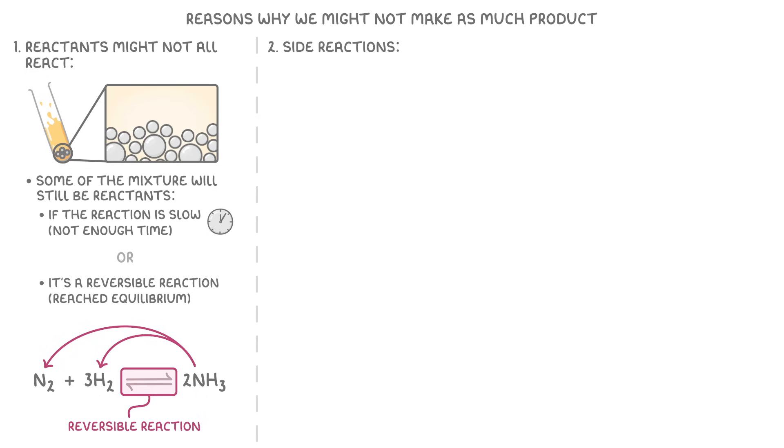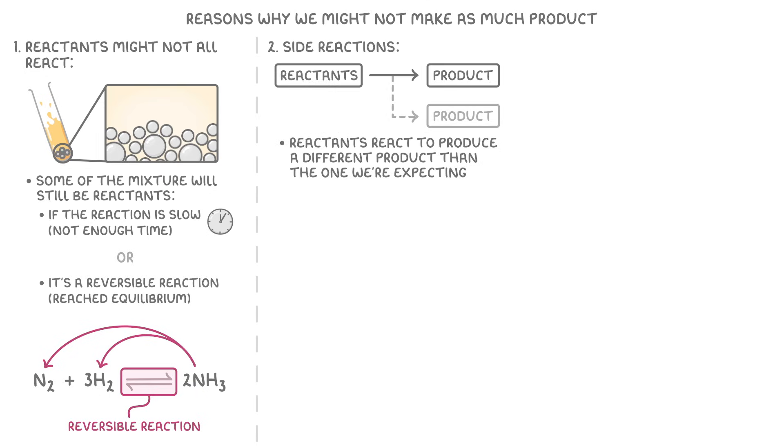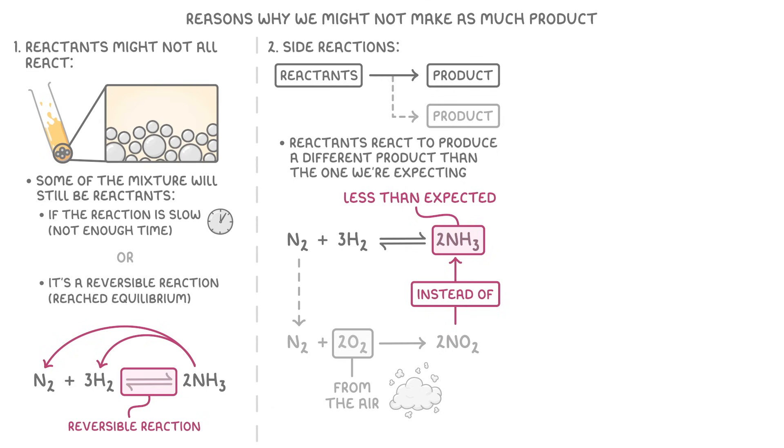The second reason is that there could be side reactions, which is where the reactants react to produce a different product than the one that we were expecting. For example, if we were looking at the same reaction as a minute ago, some of the nitrogen might react with oxygen from the air to make nitrogen dioxide, instead of going to make ammonia like we wanted it to. And so we'd end up with less ammonia than we expected.